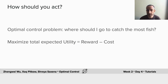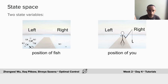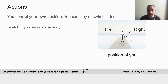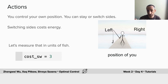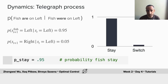This is an optimal control problem: where should you go to catch the most fish? The goal is to maximize the total expected utility, which is the reward minus the cost. To define that problem, we have to define the states, actions, dynamics, and utility. The state space has two state variables — the position of the fish and your position — both of which can be on the left or the right. You control your own position and can stay or switch sides. Switching sides costs energy, measured in units of fish. The dynamics are dictated by a telegraph process: the probability that the fish stay on the left given they were on the left one time step ago, with a staying probability p_stay of 0.95 and a switching probability of 0.05.